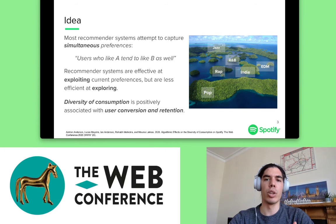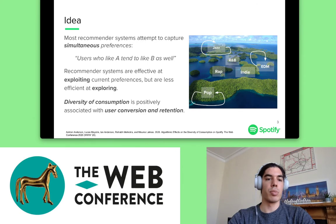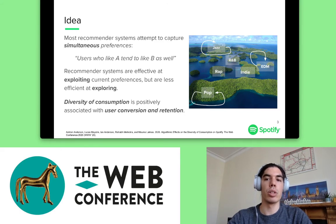The user might like an island a lot and let the recommendation system explore it very thoroughly, but there are also other islands that the user might like. It has also been studied that diversity in consumption is particularly important in web services since it is positively associated with metrics like retention and conversion. So, we would like to find a way to help the user move around those little islands or filter bubbles in a very meaningful way.